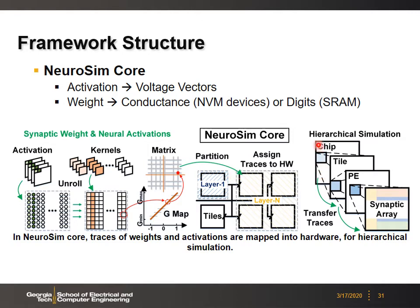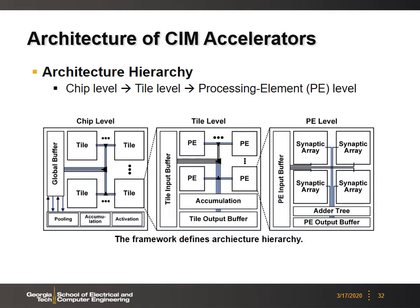The chip architecture is hierarchical: at the top level we have the chip, then multiple tiles in the chip, multiple processing elements (PEs) in each tile, and multiple synaptic arrays in each PE. At each hierarchical level there are input and output buffers, routing, and adder trees to sum partial sums from lower-level blocks.